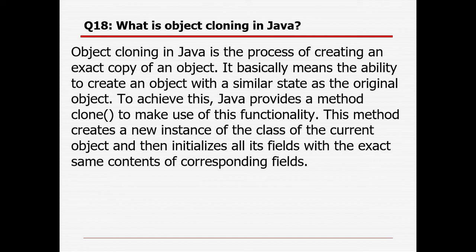What is object cloning in Java? Object cloning is the process of creating an exact copy — a replica — of an existing object. It means the ability to create an object with a similar state as the original object. Using the clone method, we can clone any existing object. This method creates a new instance of the class of the current object and initializes all its fields with the exact same content of the corresponding fields.